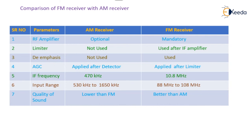AM receiver also has a higher range of 3 megahertz to 30 megahertz, whereas FM has only one range, that is 88 megahertz to 108 megahertz.